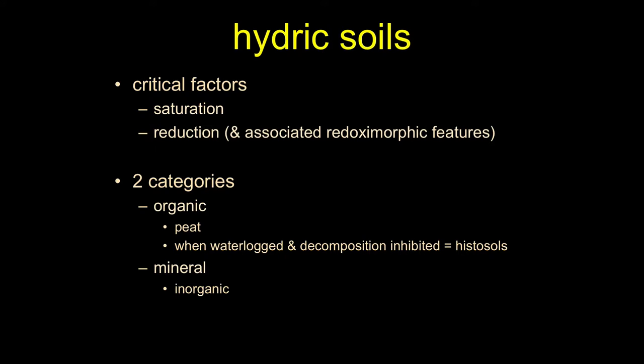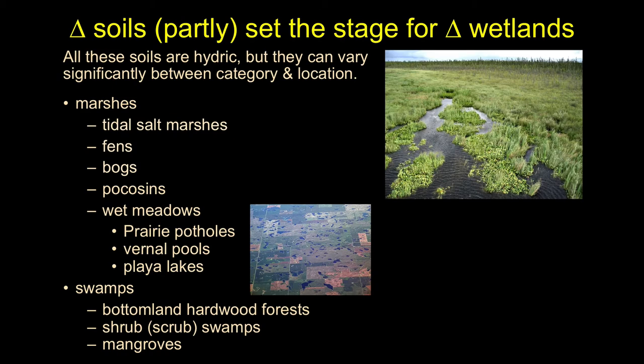Organic hydric soils include peat and histals — waterlogged organic soils. The mineral stuff is primarily rock; the organic stuff is primarily life-derived material. These soil types are important because they provide the context for the kind of wetlands that can exist in a given place — soils first, then water as the next most important factor.